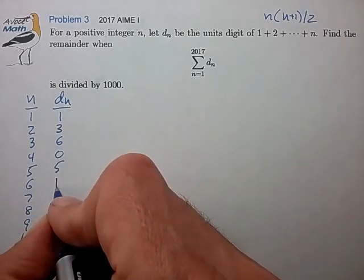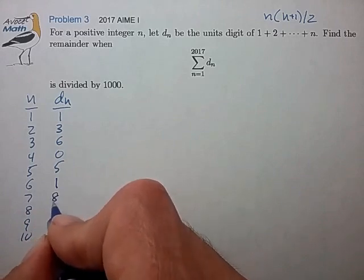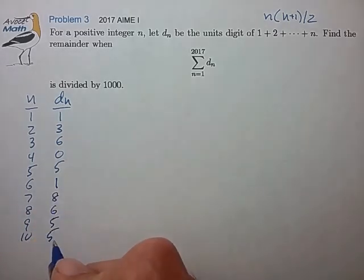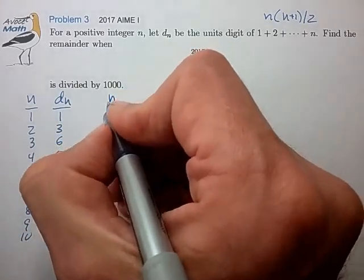So add 6. That gives you the units digit of 1, 7, 8, then 6, 5, 5. Okay, I don't see a pattern, so let's continue this a little bit further.